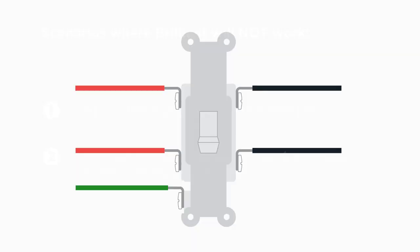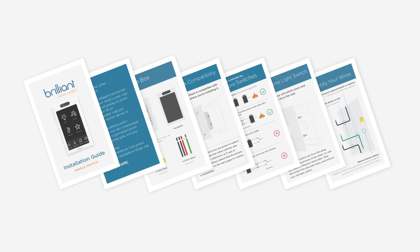A good way to tell if a switch is a four-way is if, in addition to the ground, there are four line and load terminals on the switch. If you face these scenarios, you can refer to the diagrams found in your installation guide for further assistance.